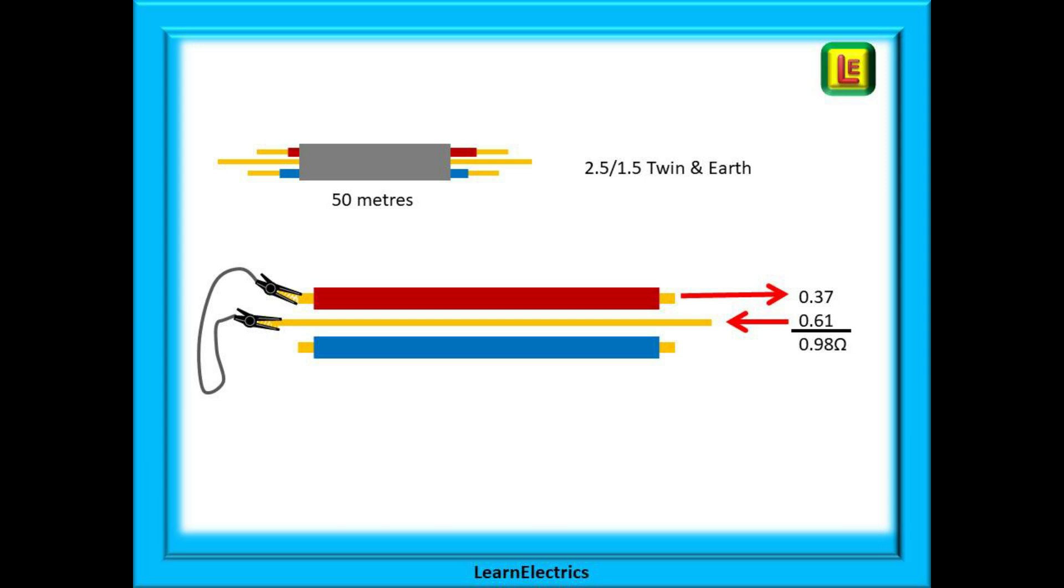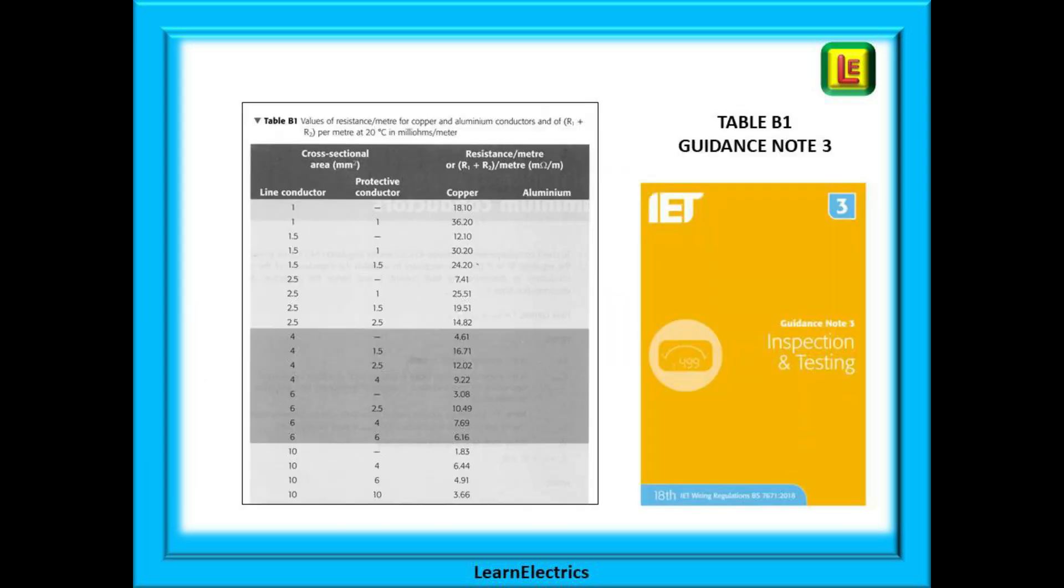Notice that the thinner 1.5 cable has a greater resistance than the thicker 2.5 phase cable. Where do these numbers come from? The numbers we are using today are from guidance note 3 or GN3. This is an industry recognized publication on inspection and testing.